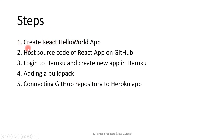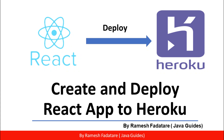Let me summarize the steps: we created a React Hello World app, hosted the source code on GitHub, logged into Heroku and created a new app, added a build pack, and used the Connect to GitHub deployment method to deploy our repository to Heroku. It's very simple. I hope you found this video useful — just follow these steps and you'll be able to deploy your React app on Heroku. Thanks for watching, see you in the next video.